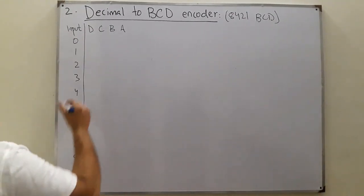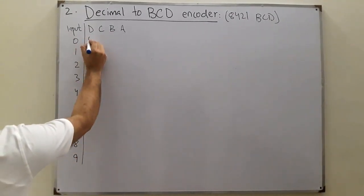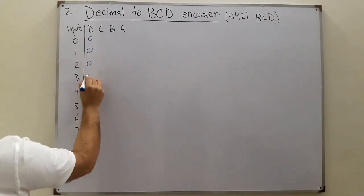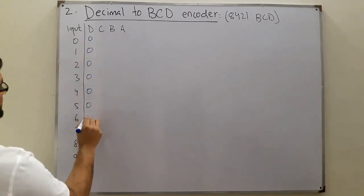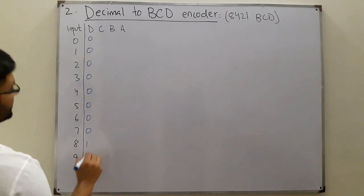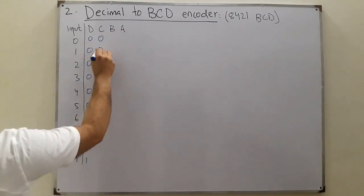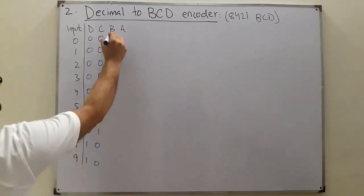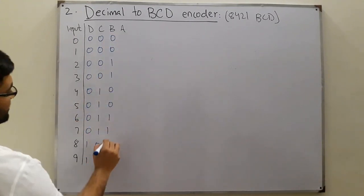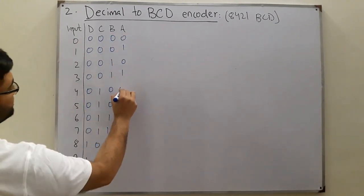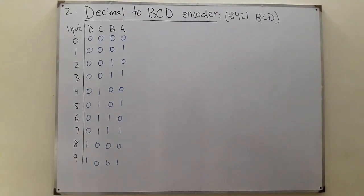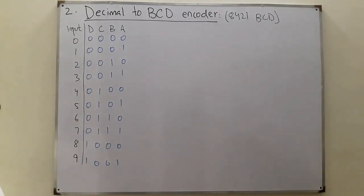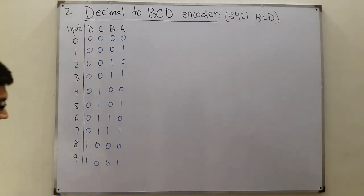You know how to fill up the truth table. We have one, two, three, four, five, six, seven, eight - and then we have a group of fours, a group of twos. You know this from the basics. Now what you do is look for the minterms that are high.